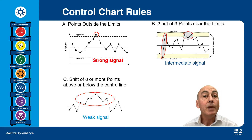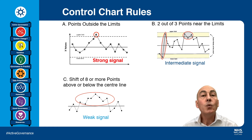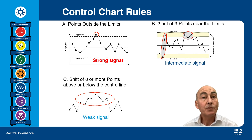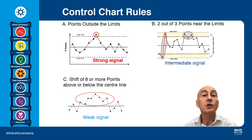There are a couple of other rules you may come across. The first is two out of three points near the limits — this can be two points near one limit, or one point near the lower limit and one near the upper limit. There's still a signal, but this is an intermediate strength signal. The third rule is a weak signal: eight or more points above or below the centre line, called a shift. Whereas a shift is relatively easy to spot on a control chart by eye — you can count to eight fairly easily — picking out two out of three points close to the limits raises the question of what 'close' means. It's the final third of the chart up to the control limits, and you often need complicated statistical software to pick this out.